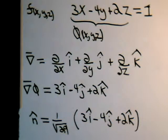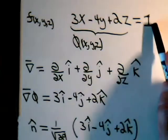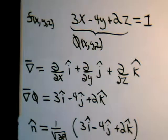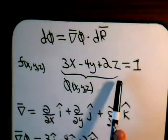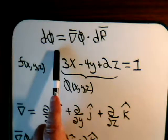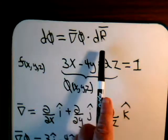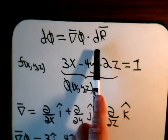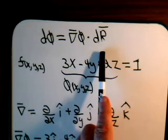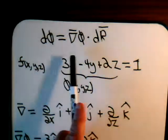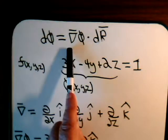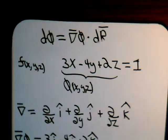And that is our unit normal vector for this particular three-dimensional surface. Really, that's all there is to it. The key realizations are: we have a three-dimensional surface; our scalar is equal to some constant so its differential is zero; this implies the gradient and dr are perpendicular; and the differential displacement of the position vector is tangent to the surface. Therefore the gradient is perpendicular to the surface. In the next video, we'll take some more complicated examples, so join us as we continue our discussion.